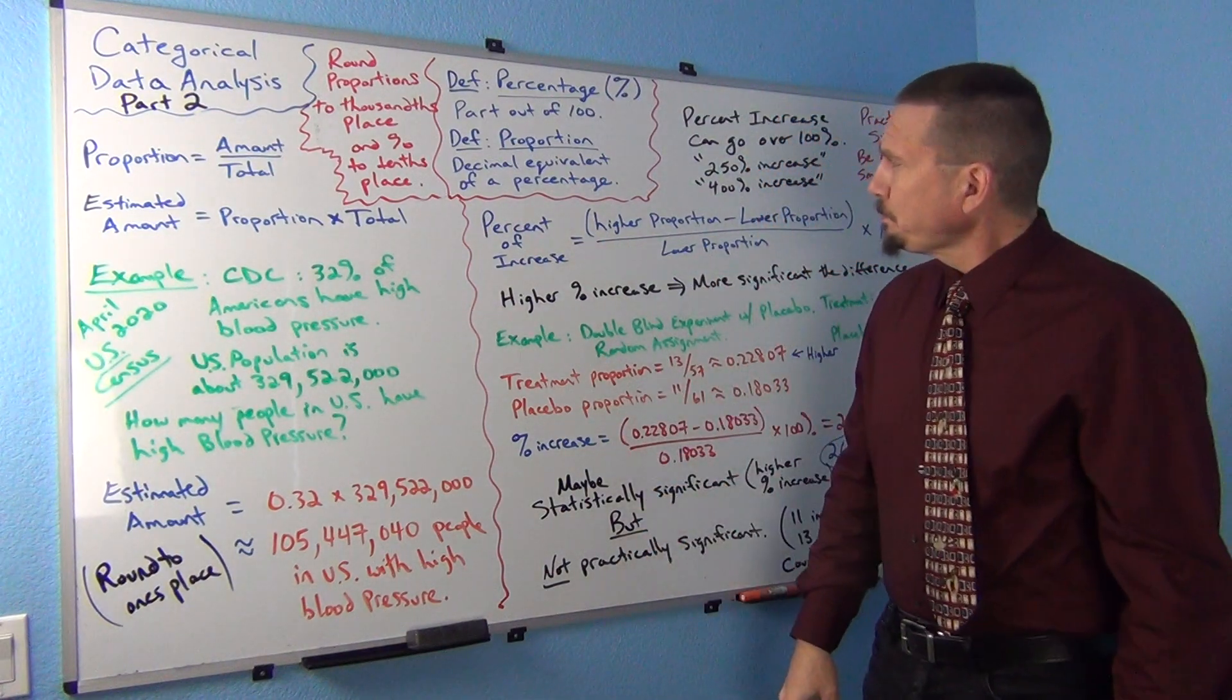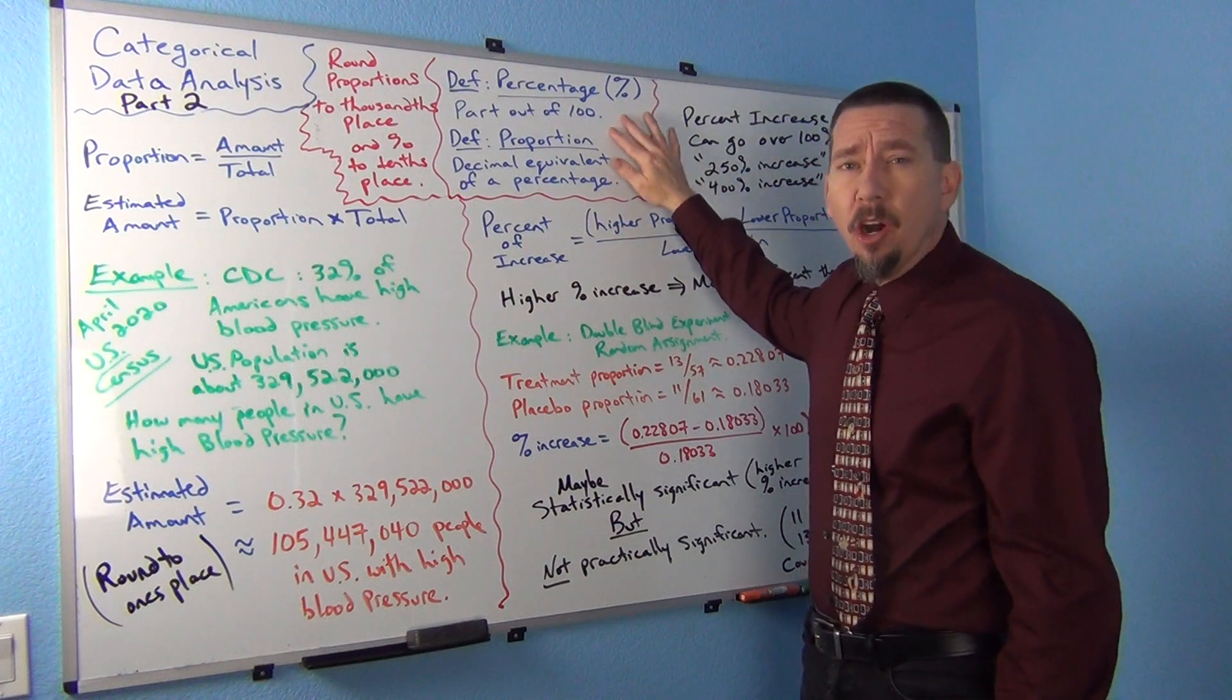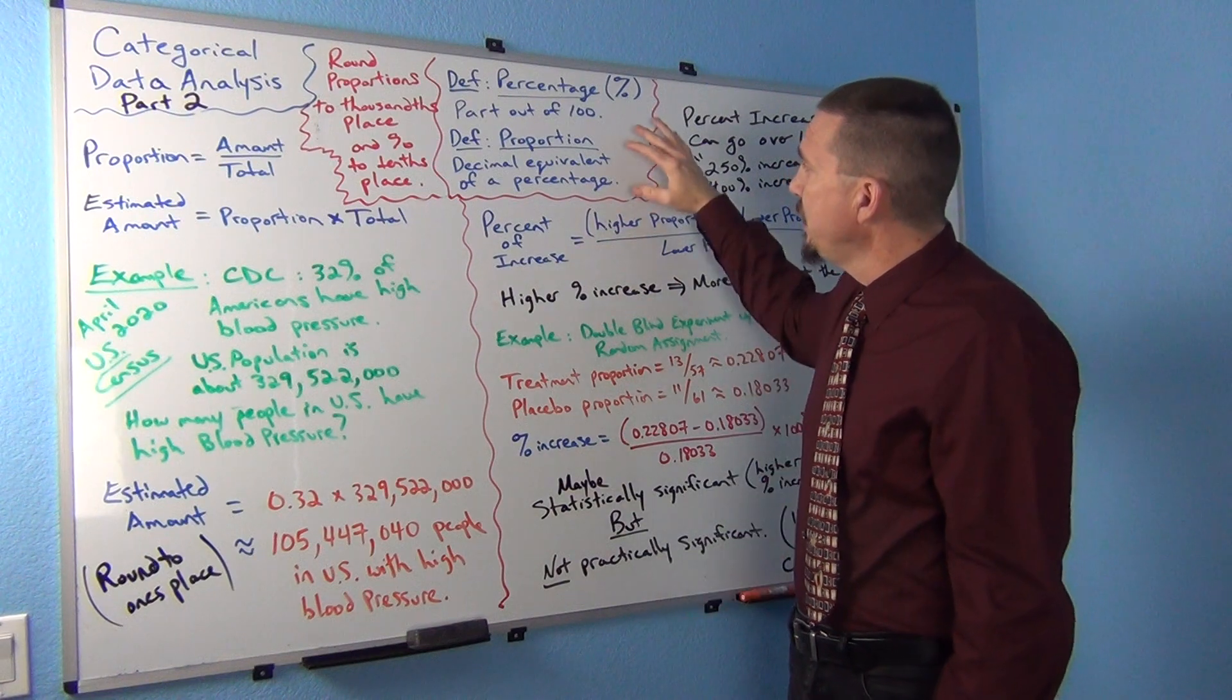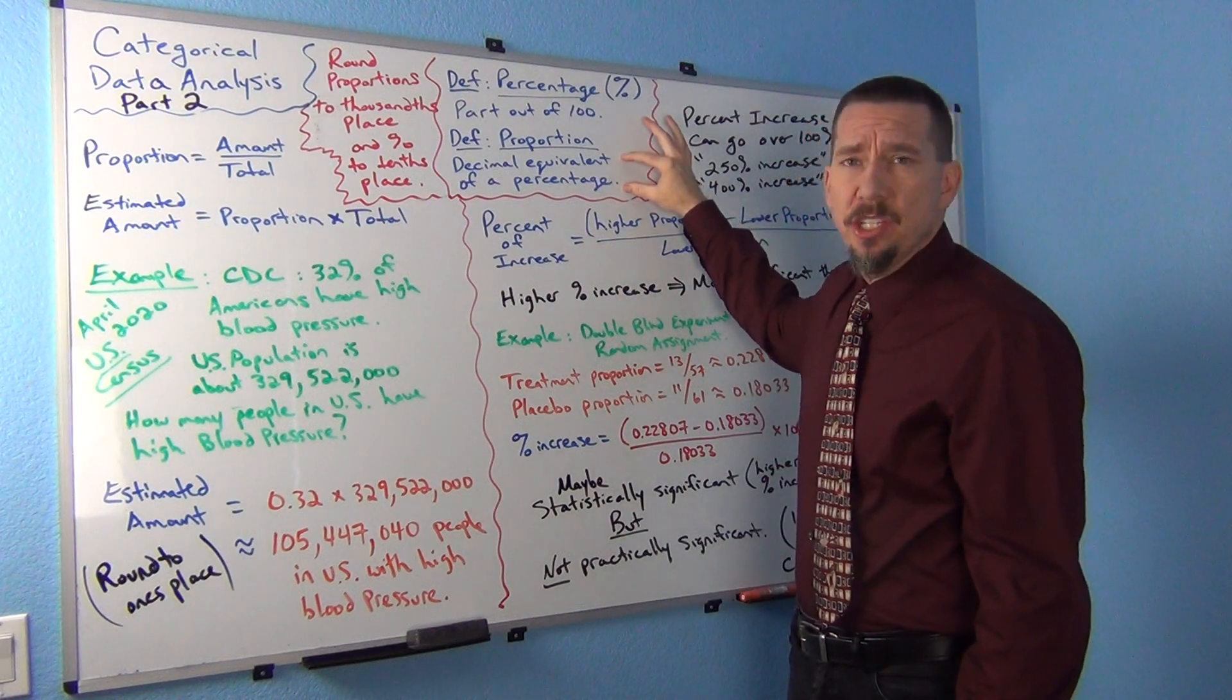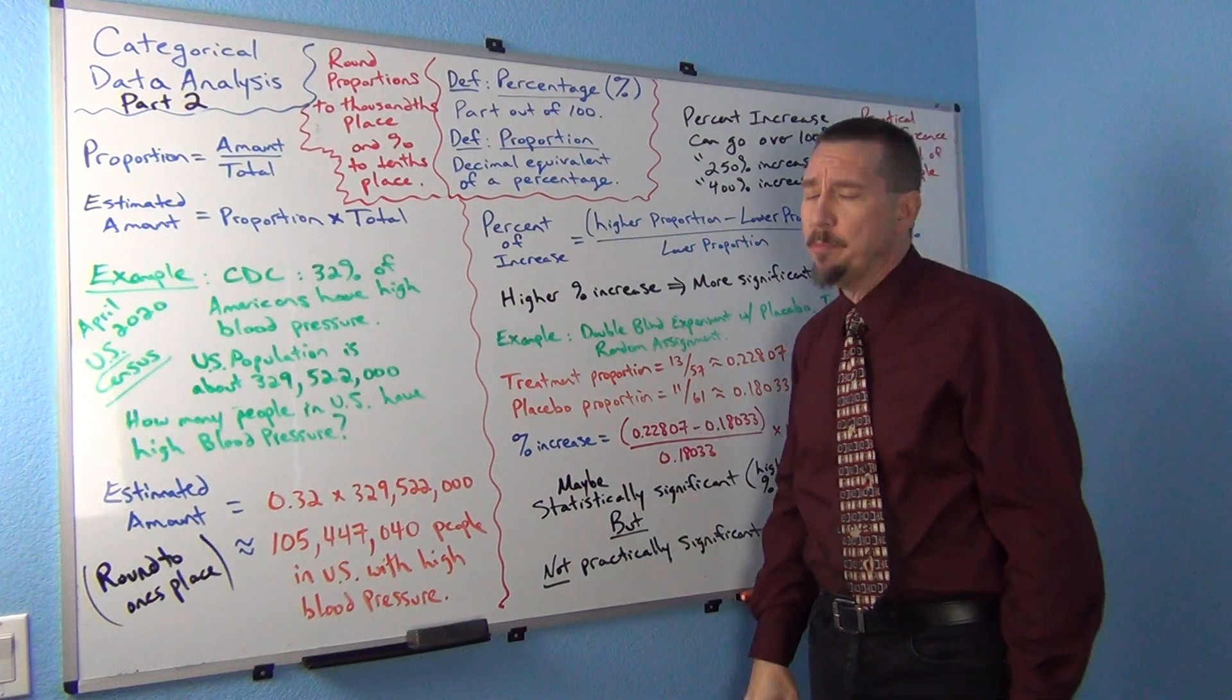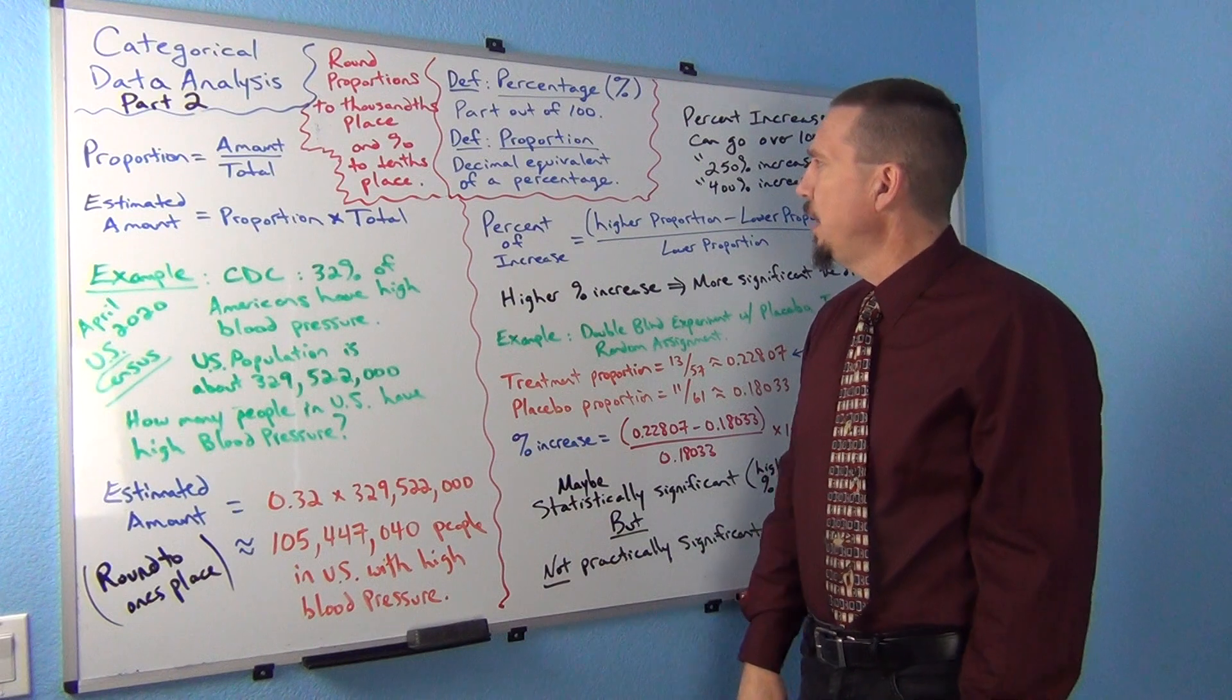So a couple things to keep in mind we said last time was a percentage again is a part out of 100 and the decimal equivalent of a percentage is often called a proportion in statistics. So when you hear that word proportion think of the decimal equivalent of the percentage.